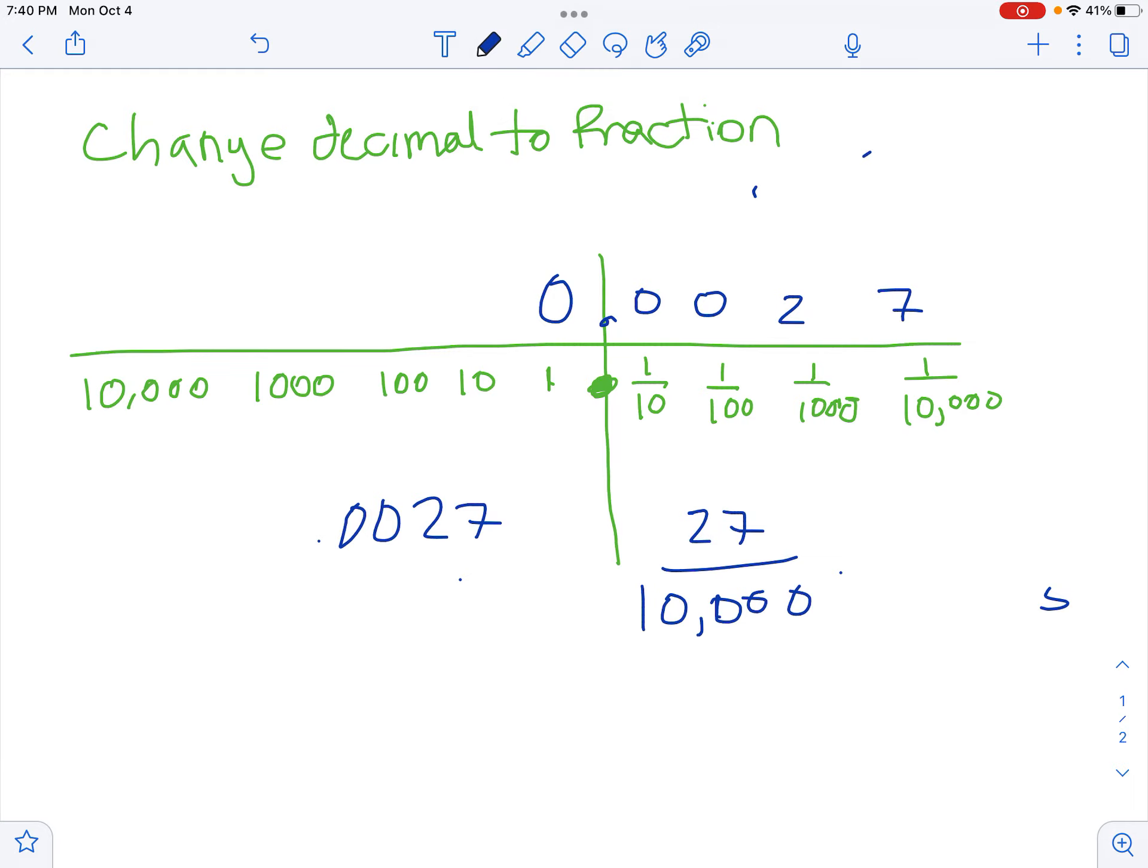If that were a 5, I could reduce it, right, then it would be 25 ten thousandths, or 25 over 10,000, and I would divide by, actually I could divide by 25 over 25, and that would be the same thing as 1 over,